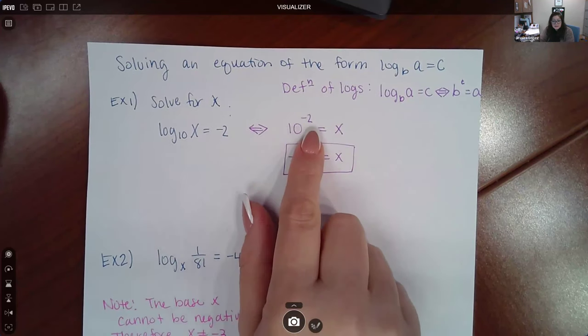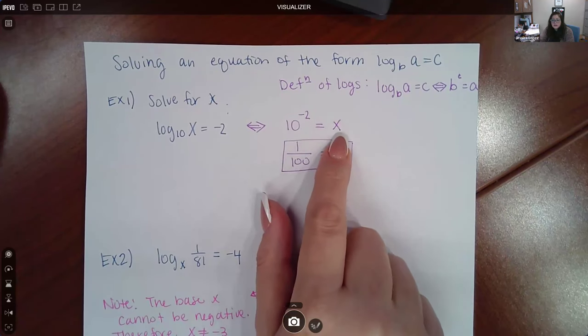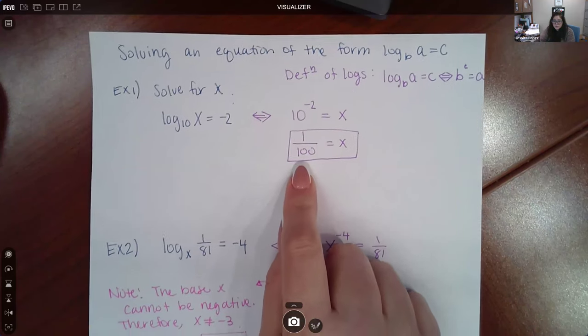The base is 10. The exponent will now be negative 2, and it will now be equal to that argument A, X. And then this can be typed in your calculator, and it's just 1 over 100.